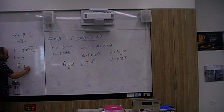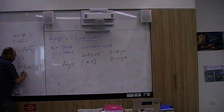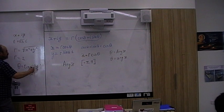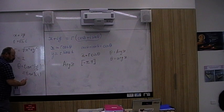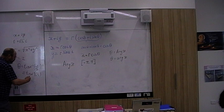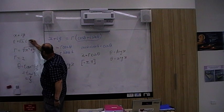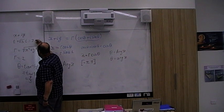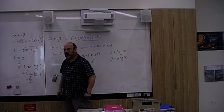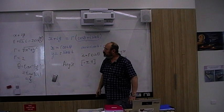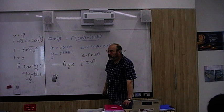Now, how can we find theta? It will be tan inverse of y divided by x. So theta equals tan inverse of root 3, which is pi over 3. So we can rewrite this number in polar form as 2 cis pi over 3.